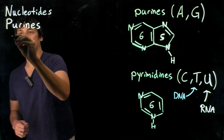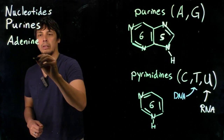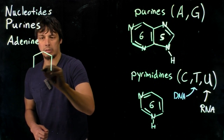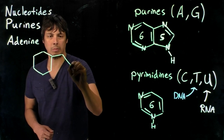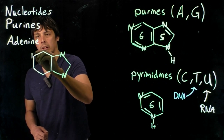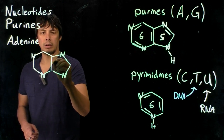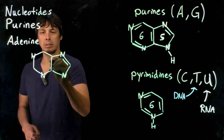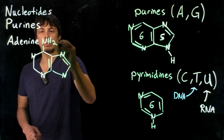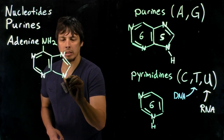The first one we're going to look at is adenine. We can draw the skeleton — the six-membered ring, five-membered ring — and place the nitrogens in the proper places. From there, we add our double bonds, and there's an amine group.